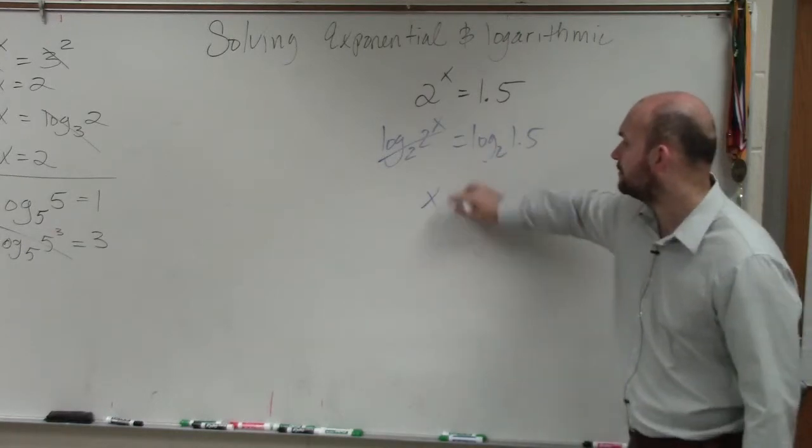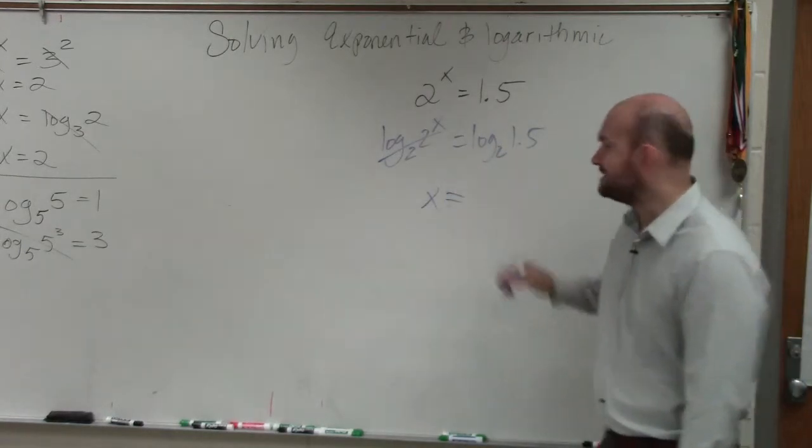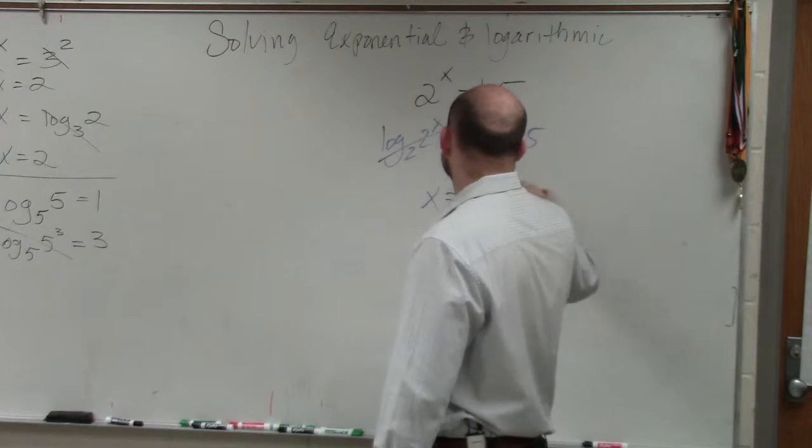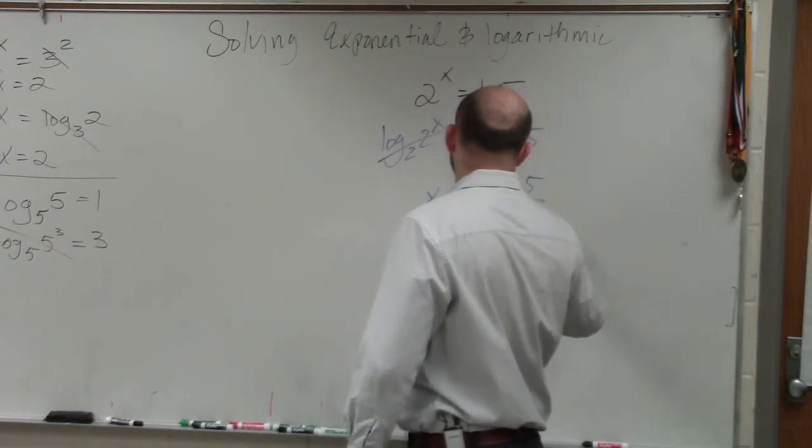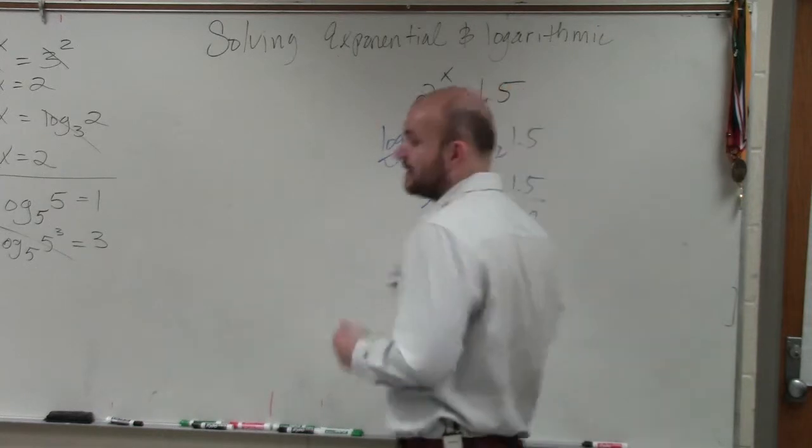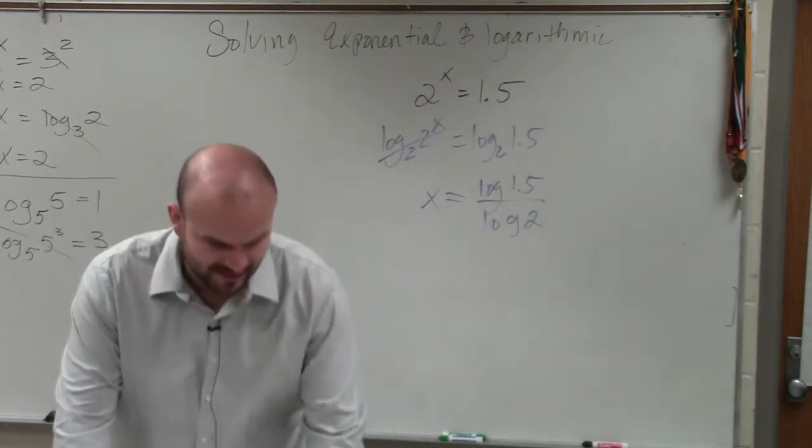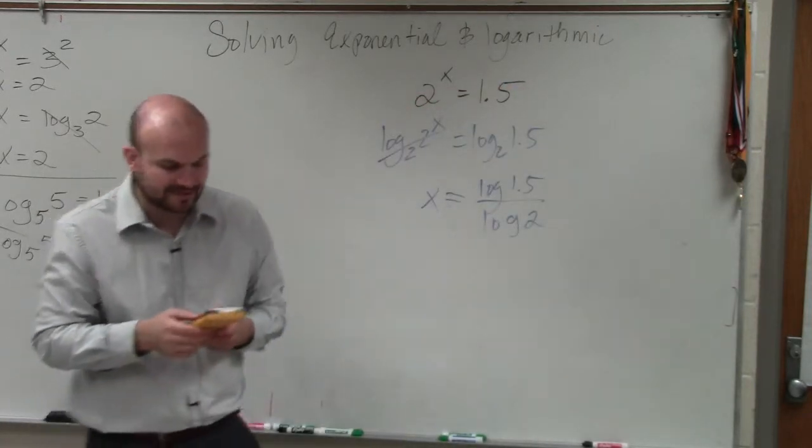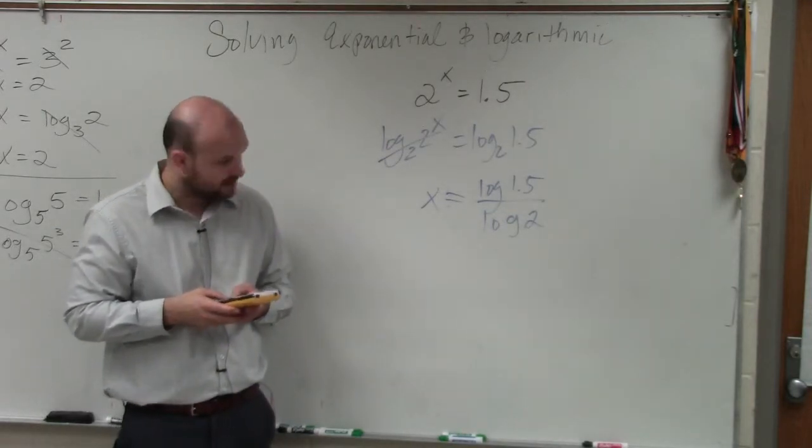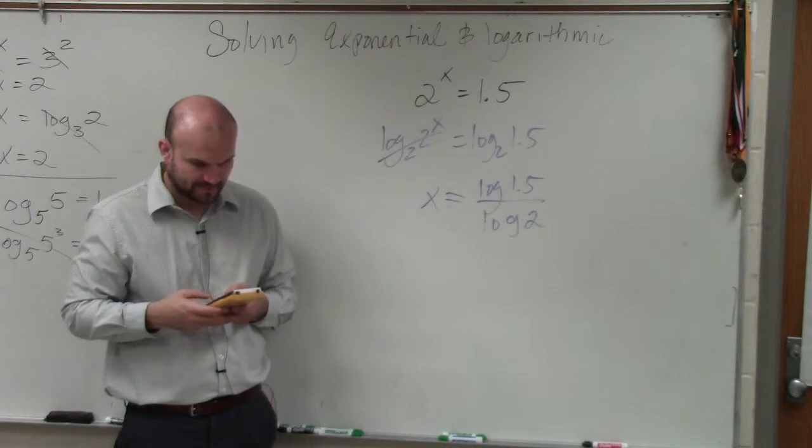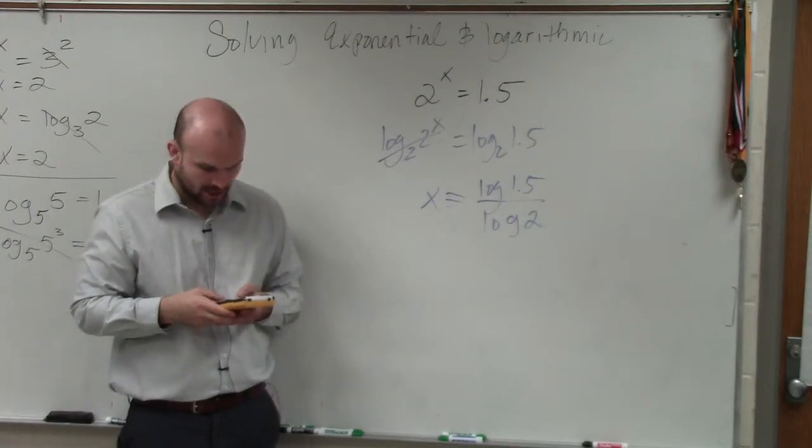Therefore, I have x equals, again, to take the log, I'm going to take log of 1.5 over log of 2. Then, using my calculator, as I mentioned guys, you're going to need to have this. I'm going to use my base formula. I'll just take log of 1.5 divided by log of 2.